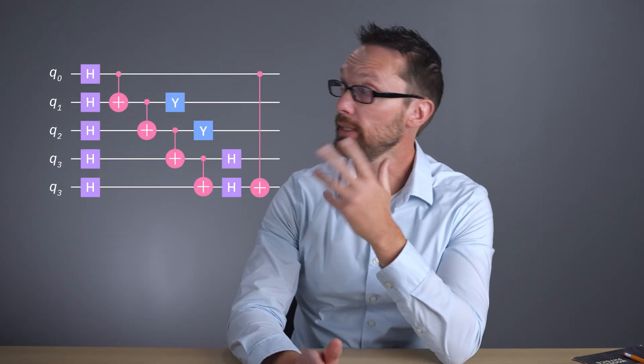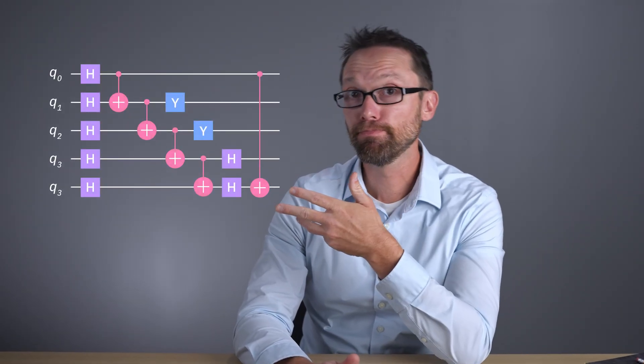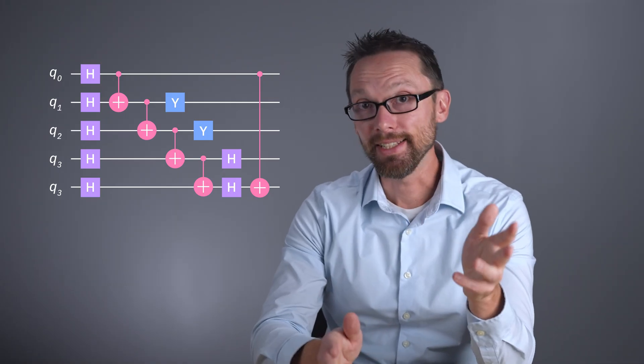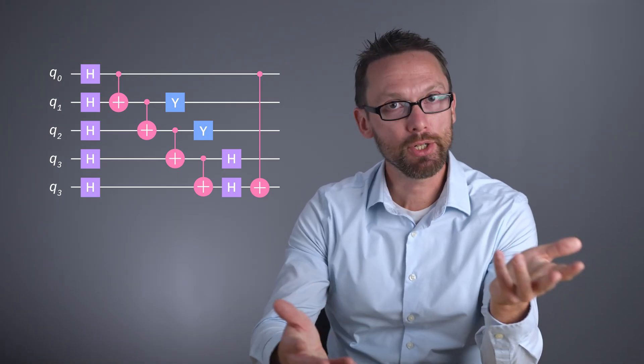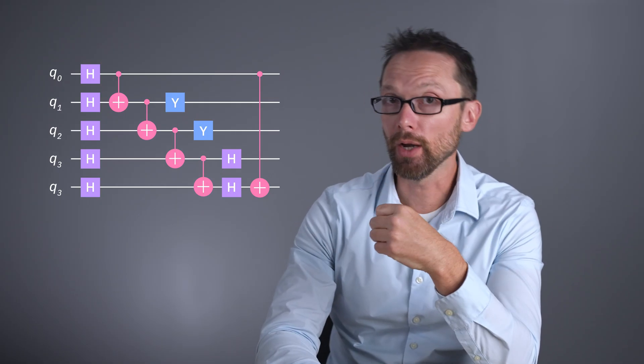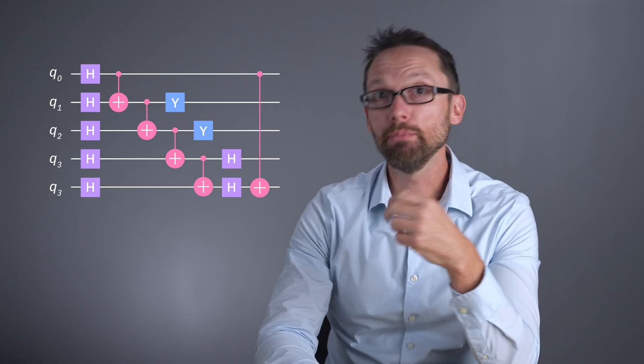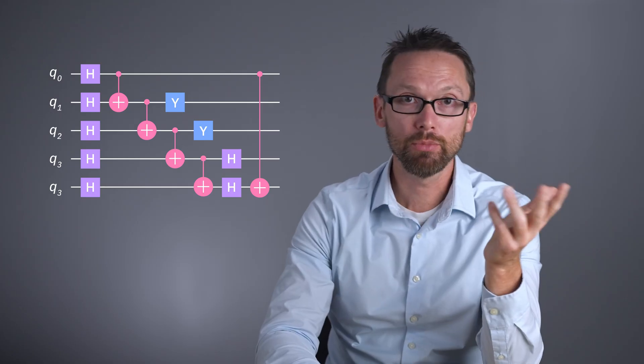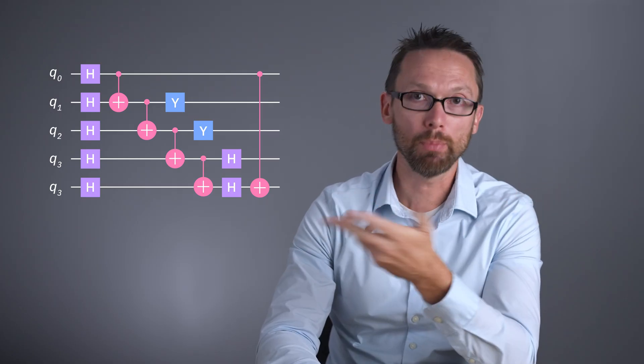But why do these errors occur? A common way to visualize a quantum algorithm is through a quantum circuit diagram like this one. Each block represents a quantum gate — an operation performed on one qubit, shown on a single wire, or multiple qubits, shown spanning multiple wires.